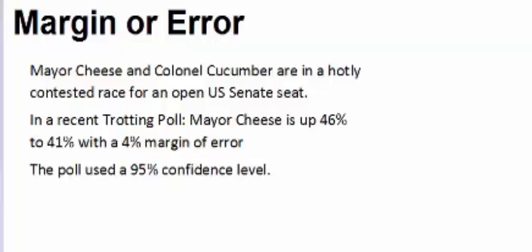Here you have Mayor Cheese and Colonel Cucumber in a hotly contested race for an open U.S. Senate seat. In a recent trotting poll, Mayor Cheese is up 46% to 41%. So Mayor Cheese pulled in at 46%, Colonel Cucumber pulled in at 41%, and this poll has a 4% margin of error. The poll used a 95% confidence level, we'll discuss what that means in a second.